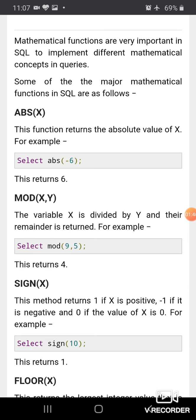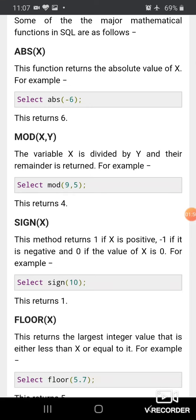Third is SIGN(X). This method returns 1 if X is positive, -1 if it is negative, and 0 if the value of X is 0. For example, if the integer written in parenthesis of the SIGN function is positive, it returns 1; if it is negative, it returns -1.